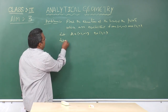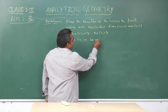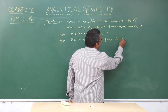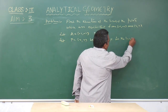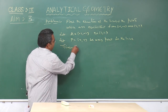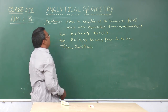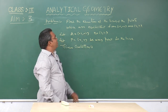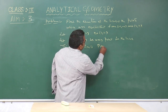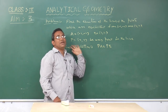Let P equals (x, y) be any point in the locus. The given condition is that P is equidistant from the given points A and B, that means PA equals PB. PA equals PB is the given condition.